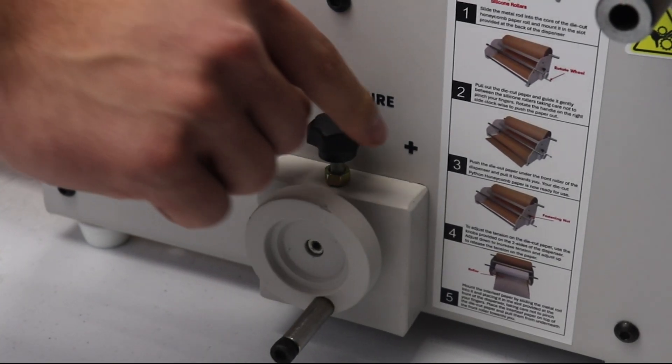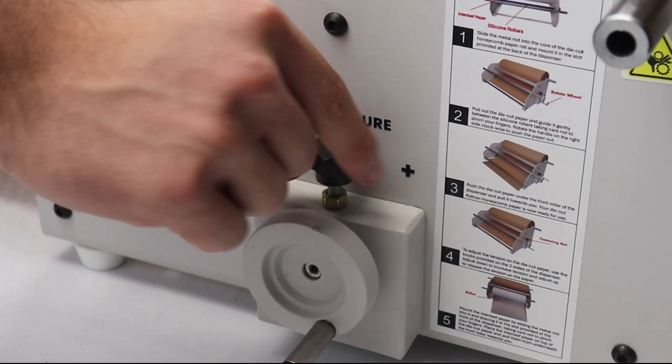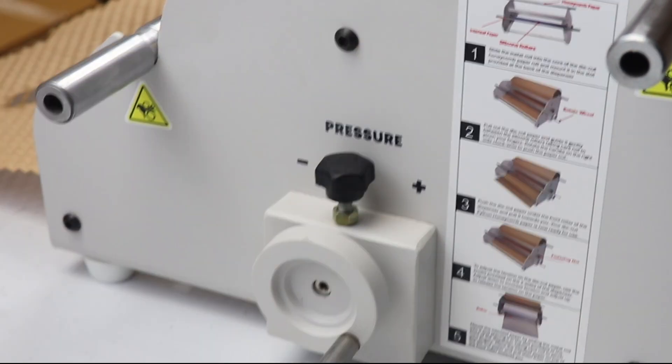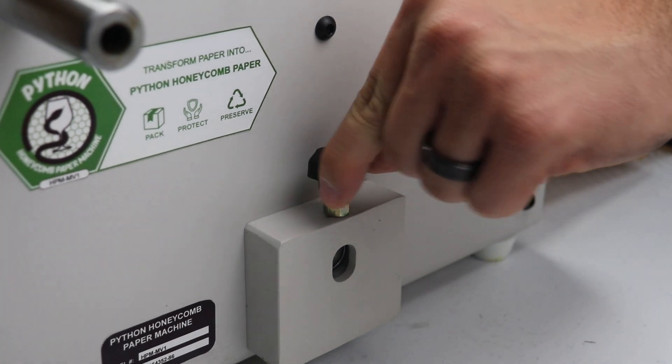Step 5. Adjust the pressure knobs on either side of the dispenser to your preferred tension. You want it to be a bit tight so the paper expands when wrapping.